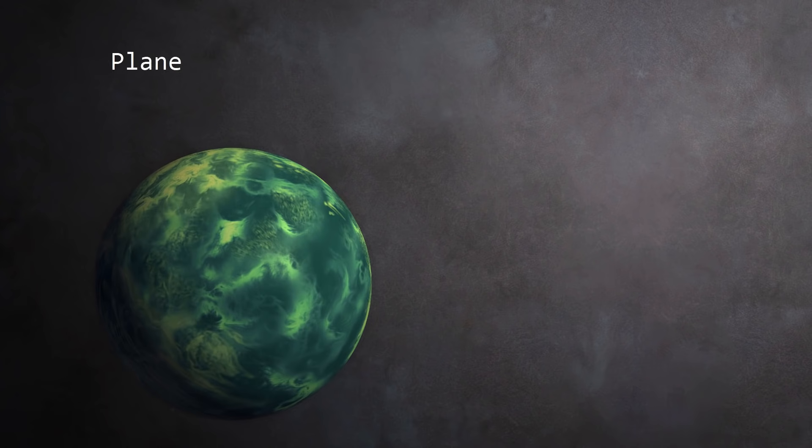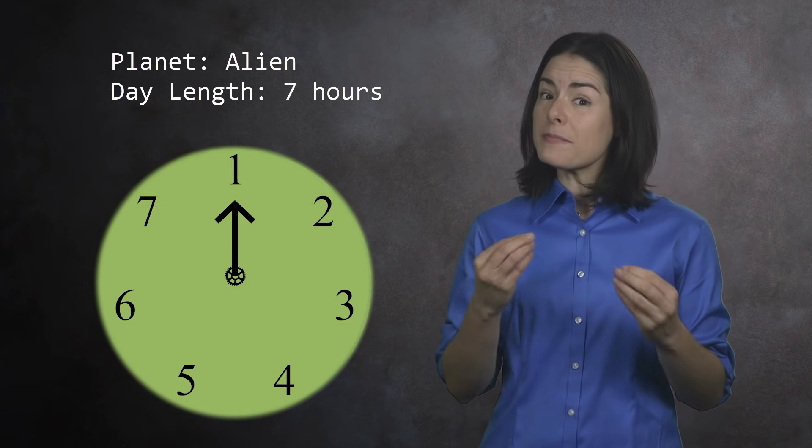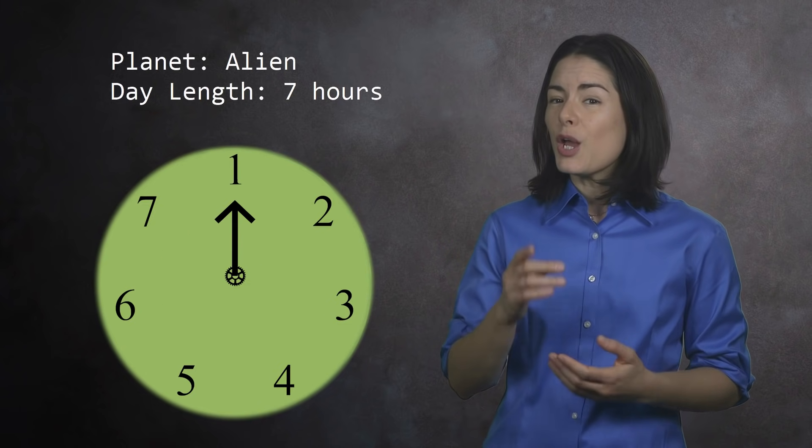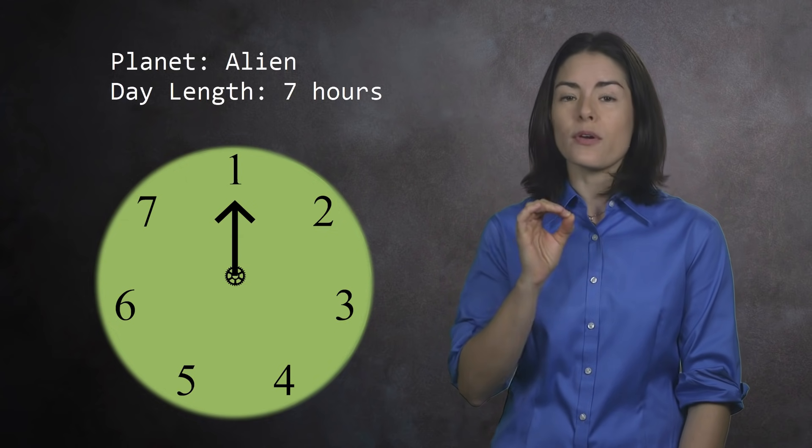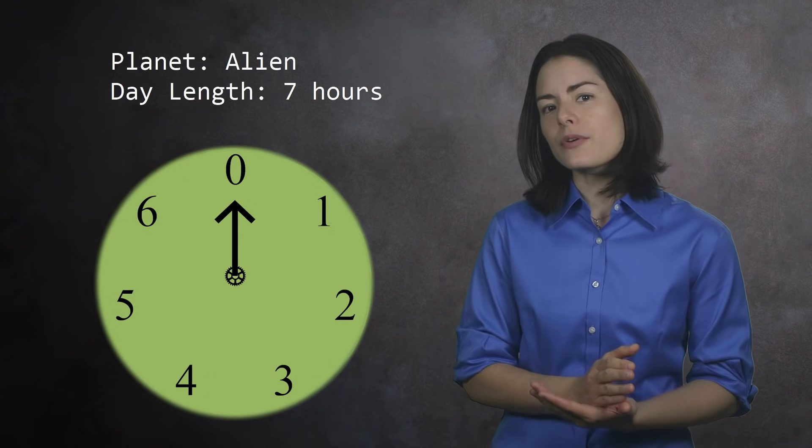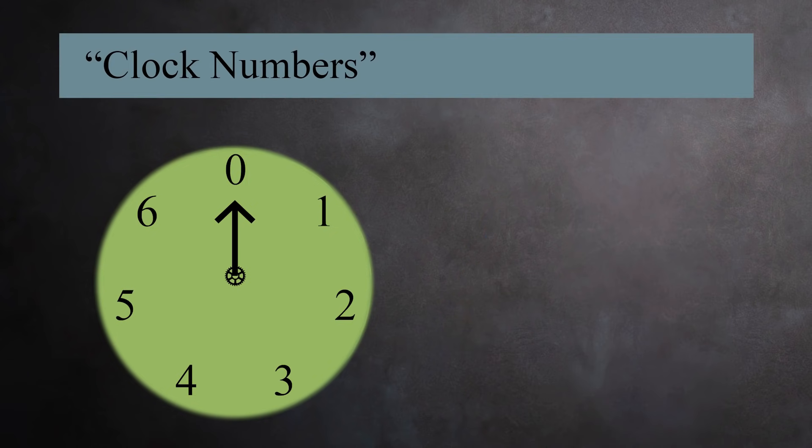To begin, imagine you live on an alien planet where each day is seven hours long. Here, a clock has seven hours. You might be tempted to number them one through seven, but if computer science has taught us anything, it's that you should begin counting with zero. So we'll number the hours zero through six. As far as the clock is concerned, there are just seven numbers, zero through six.